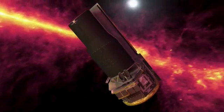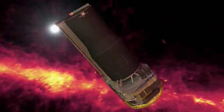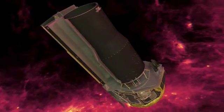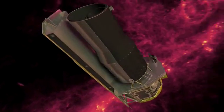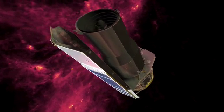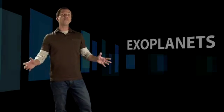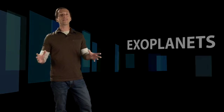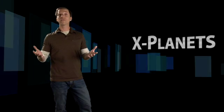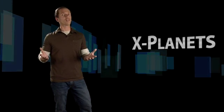Could there be other worlds out there with even wilder weather than we see in our solar system? Astronomers using NASA's Spitzer Space Telescope think they've found two that are all that and more. Instead of exoplanets, let's call these X-Planets, because they have the most extreme conditions we've ever seen.